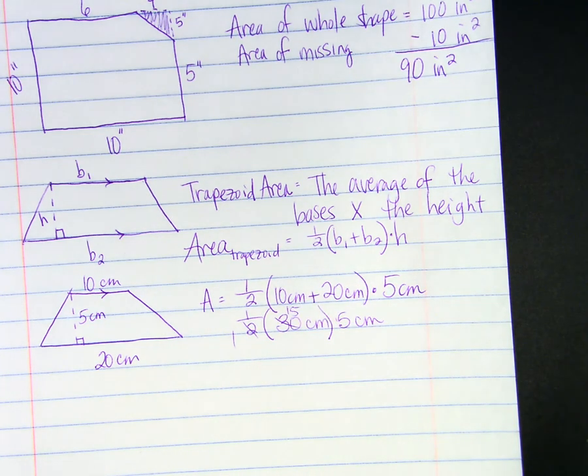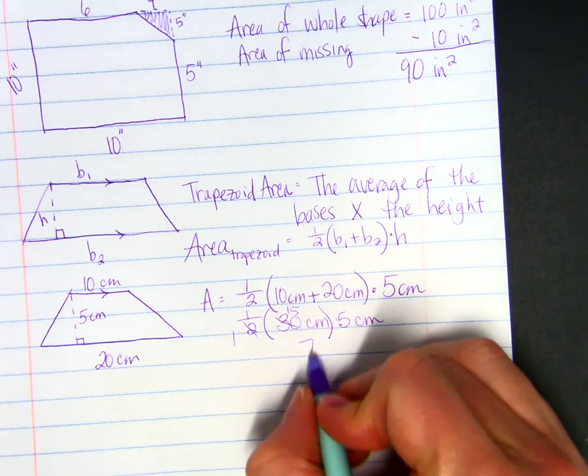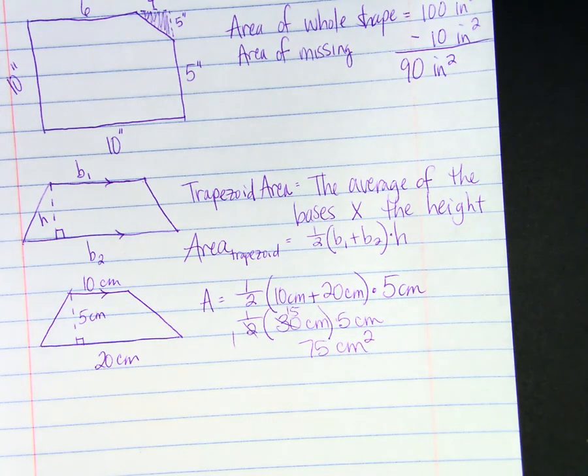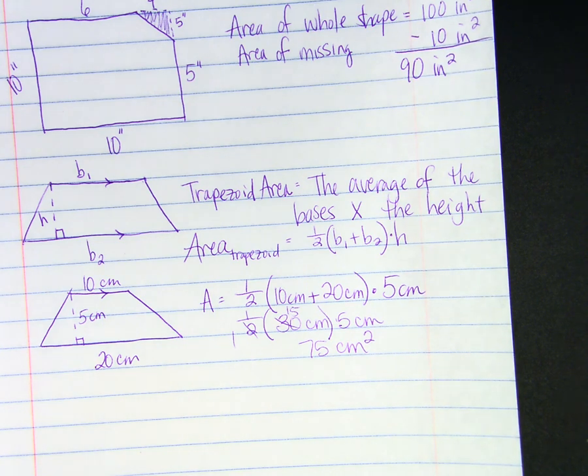15 times 5: 30, 60, 75 centimeters squared. And that would be the area of the trapezoid. Okay, that's the end of the lesson. Do some practice set.